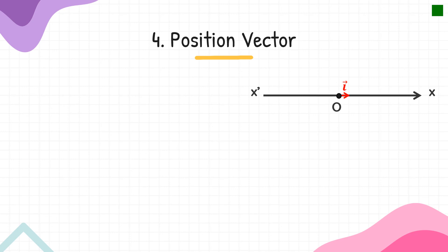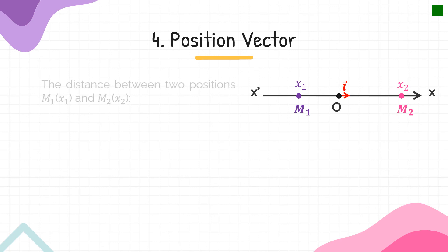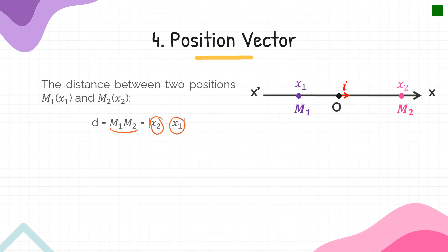One more thing: how to find the distance between two positions. The particle is moving and can be at different positions at different times. If at one instant it is at position M1 with abscissa x1, and at another instant at position M2 with abscissa x2, then the distance M1M2 equals the absolute value of x2 minus x1. You could also write it as x1 minus x2 — it doesn't matter because of the absolute value.